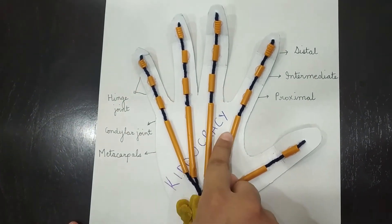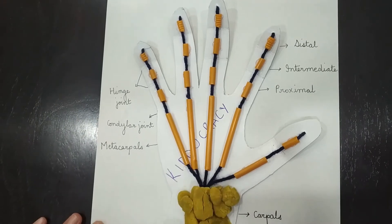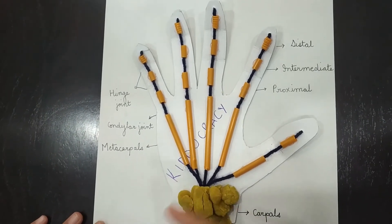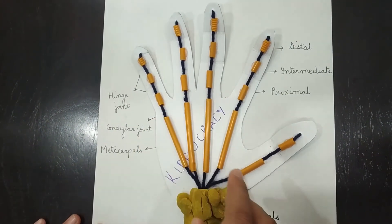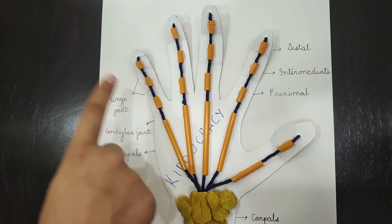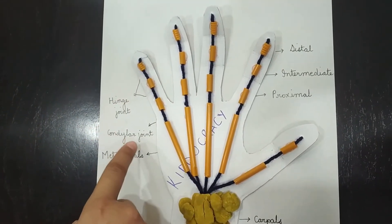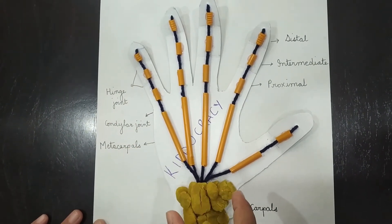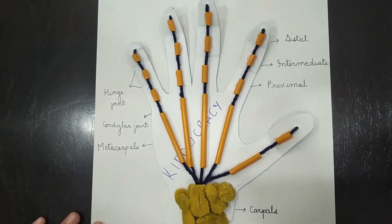There are five metacarpals and eight carpals. Coming to the joints, all the joints in the palm are synovial joints, whether they are the hinge joints between the phalanges or the condylar joint between the phalanges and metacarpals or the wrist joint.